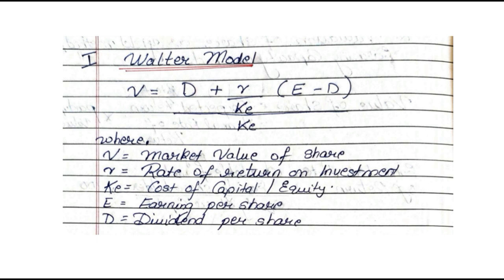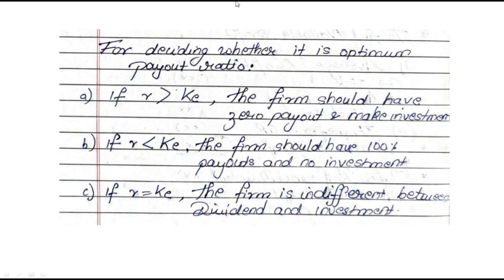Along with the main formula, there can be a few extra things asked. For deciding whether it is an optimum payout ratio — sometimes they ask, is it an optimum decision? Here are the three conditions: If R, that is your rate of return, is more than your cost of capital, the firm should have zero payout and make investment. If your rate of return is less than your cost of capital, the firm should have 100% payout. And if both are the same, the firm is indifferent between dividend and investment. So these three conditions can be asked.